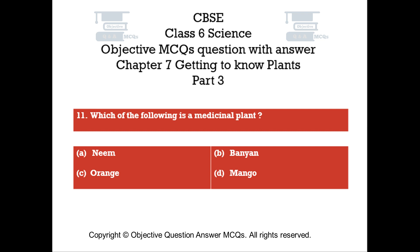Question number 11. Which of the following is a medicinal plant? Option A: Neem. Option B: Banyan. Option C: Orange. Option D: Mango.